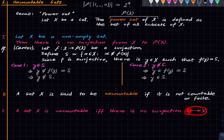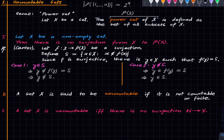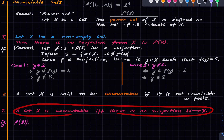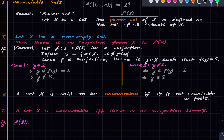Conversely, if there is a surjection from the naturals to X, then either X is finite or X is countable, so it cannot be uncountable. You can fill in the details. Now we have our first example of an uncountable set: the power set of the naturals P(ℕ) is uncountable, simply because there is no surjection from ℕ to P(ℕ) as shown by Cantor's theorem. Using this fact, P(ℕ) is uncountable.